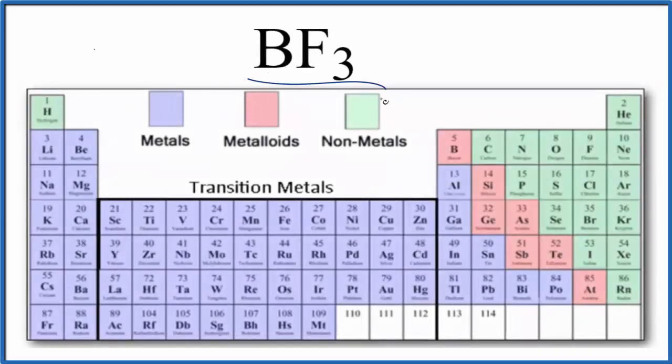Let's take a look at whether BF3 is ionic or covalent. This is boron trifluoride. So the first thing we'll do, we look at the periodic table. We find boron right here. That's a metalloid. Fluorine, that is a non-metal.